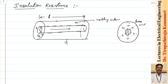The leakage current is not in the direction of the main current; it flows in the radial direction from the center of the conductor. Since this current goes to waste and is not intended to pass in this direction, we call it leakage current. Let rho be the specific resistance of the insulating material.